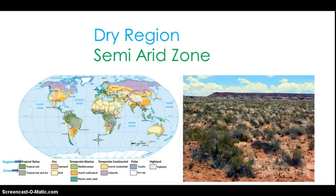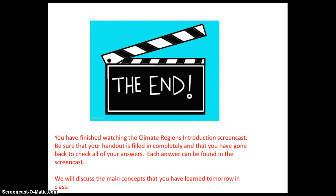Like arid climates, semi-arid precipitation levels are due to ocean currents. Ocean currents shift with the seasons, and when they shift, it dramatically changes the climate of the land. Semi-arid areas are too dry to support forest trees, but a few scattered trees that require less water can be found here. These zones are often referred to as prairies or grasslands, such as the Great Plains in the United States. This is the main difference between arid and semi-arid zones. Thanks for listening. See you tomorrow.